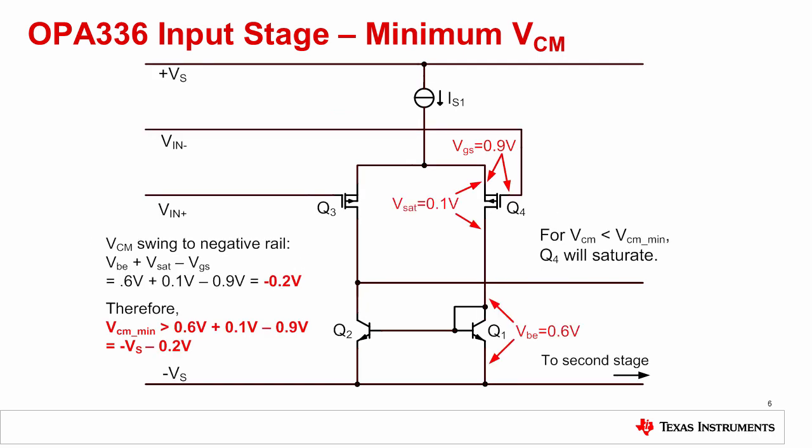Now let's consider the common mode limitations to the negative rail for the same amplifier. Again, the minimum voltage allowed on an input can be determined by doing a Kirchhoff's voltage walk from either input pin to the negative supply. Starting at VN- and walking to -VS, we see the VGS of Q4, the VSat of Q4, and the VBE or base to emitter voltage of Q1. The polarities of these voltages give the relationship shown where the minimum VCM equals VBE plus VSat minus VGS. Substituting the values for this circuit yields a common mode range of 200 millivolts below the negative rail. Once we reach the common mode limit, Q4 becomes saturated, causing non-linearity.